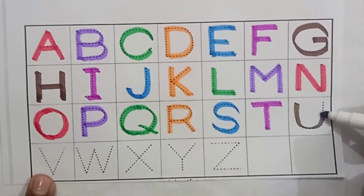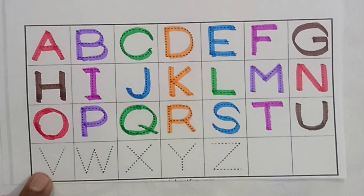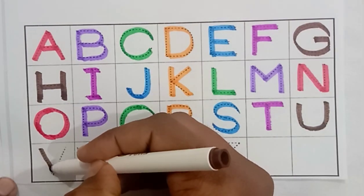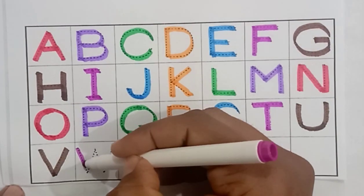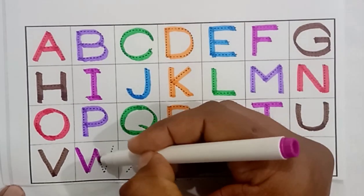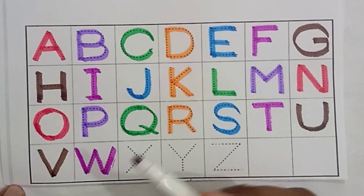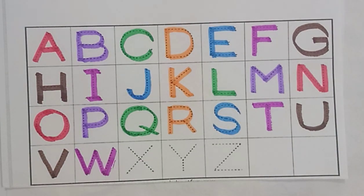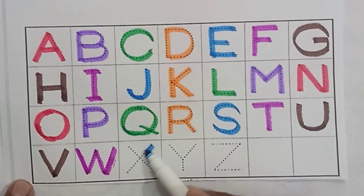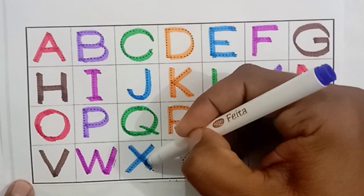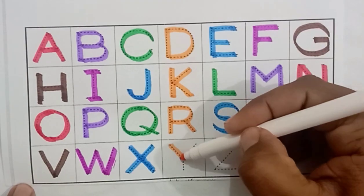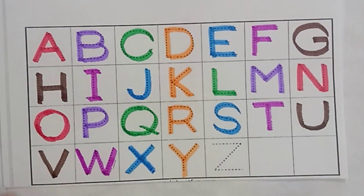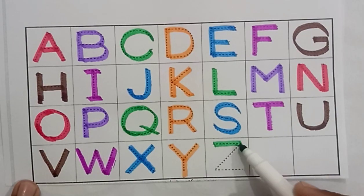Brown color U, U for umbrella. Brown color V, V for van. Purple color W, W for wheel. Blue color X, X for X-ray. Orange color Y, Y for yo-yo. Green color Z, Z for zebra.